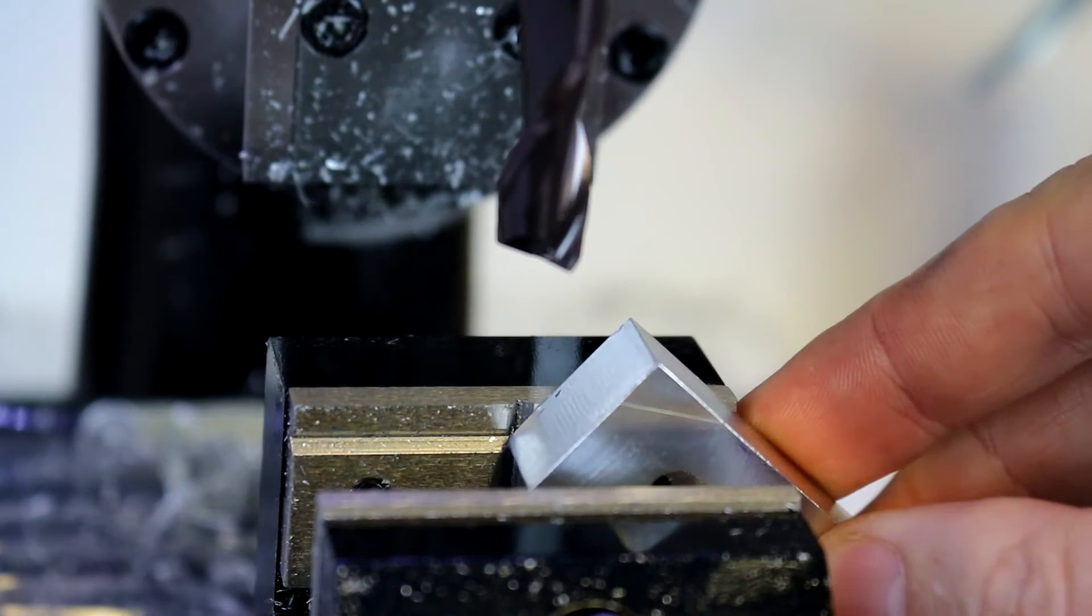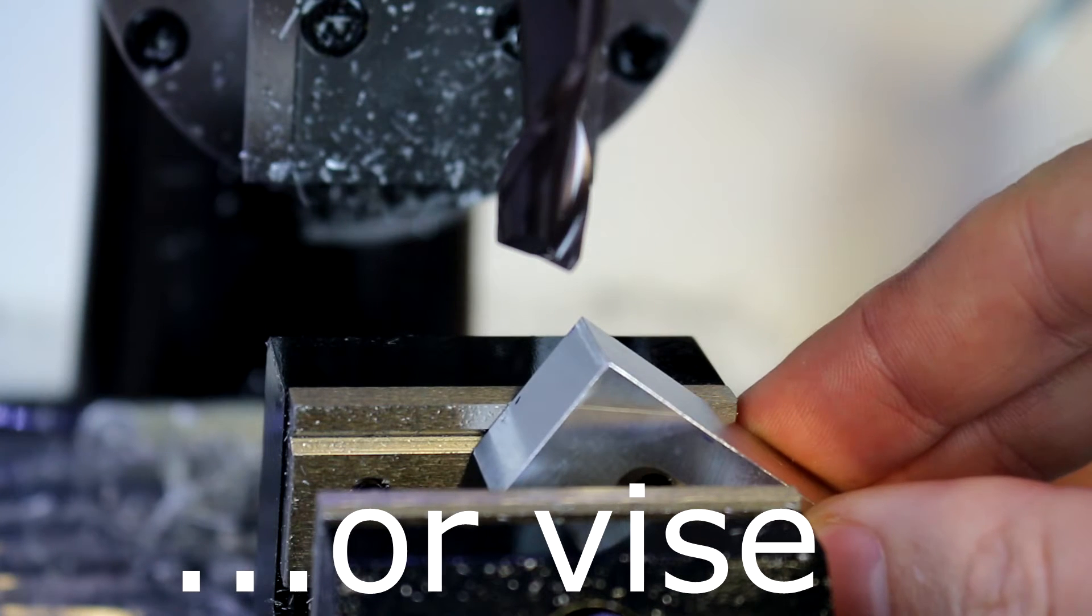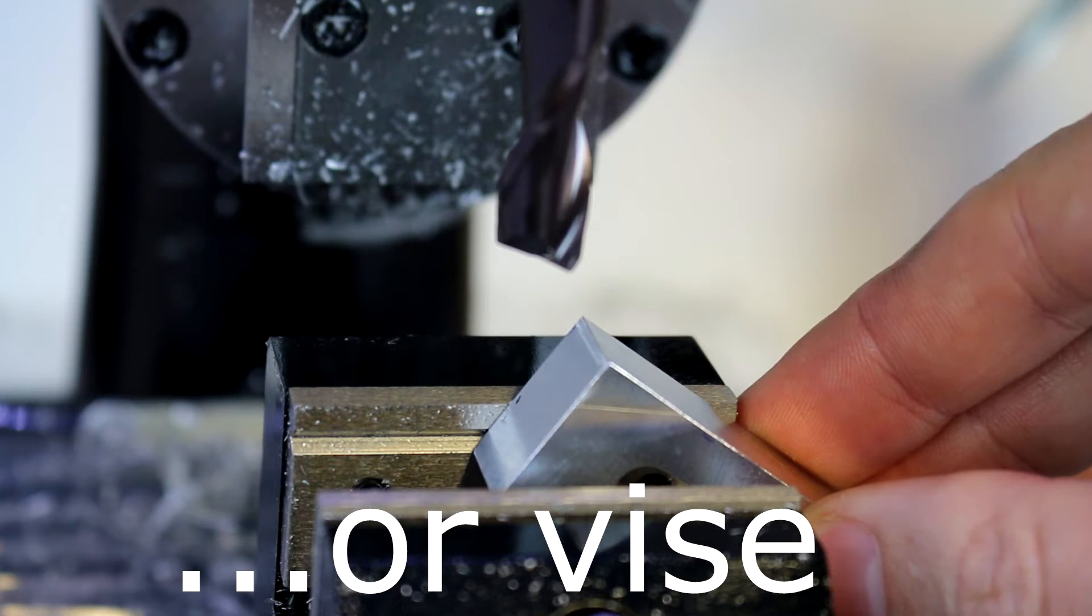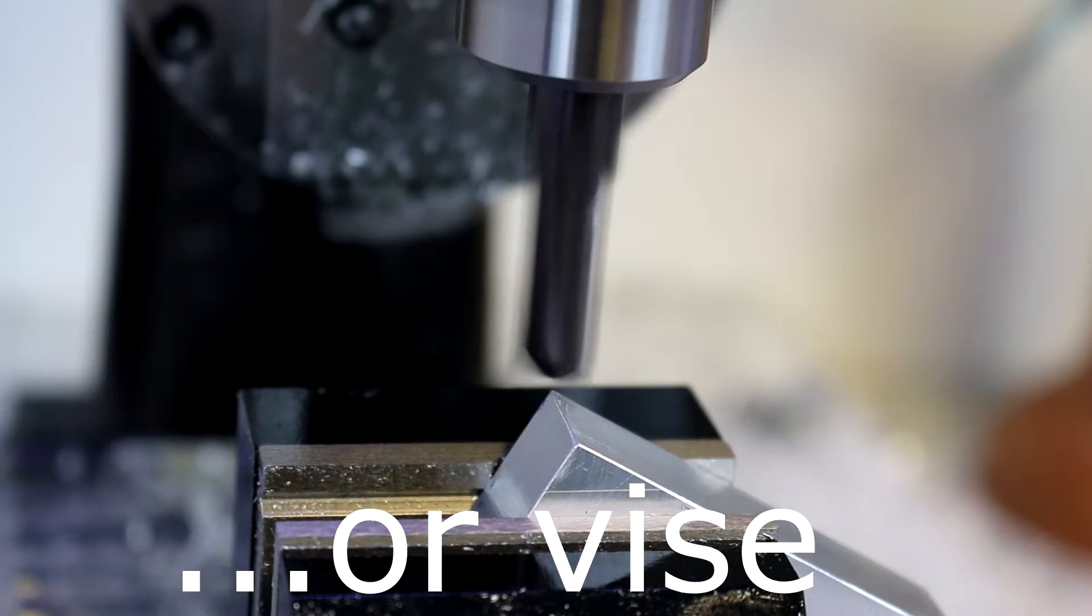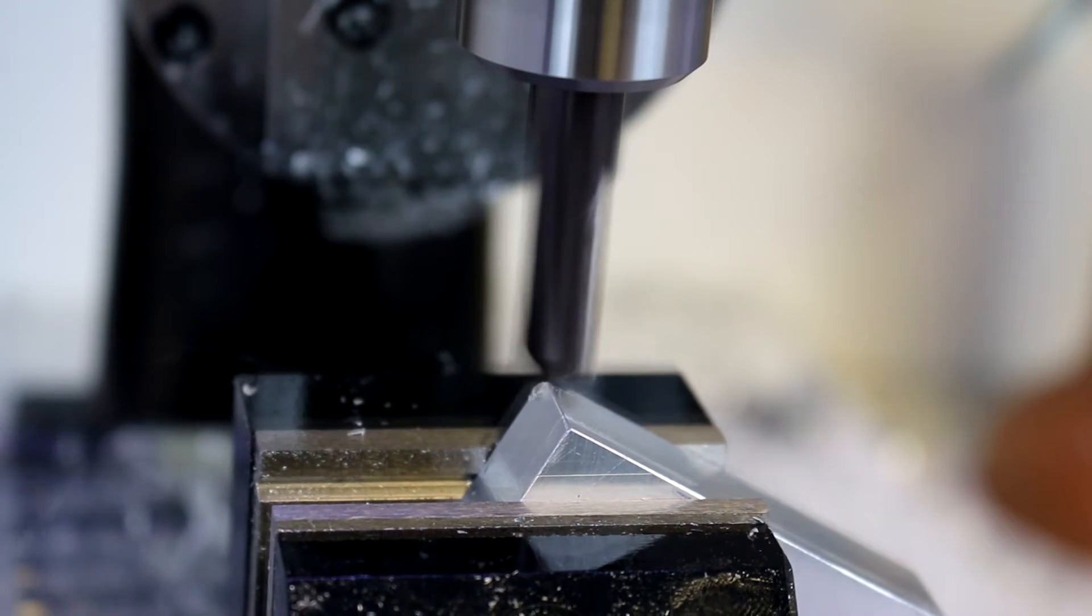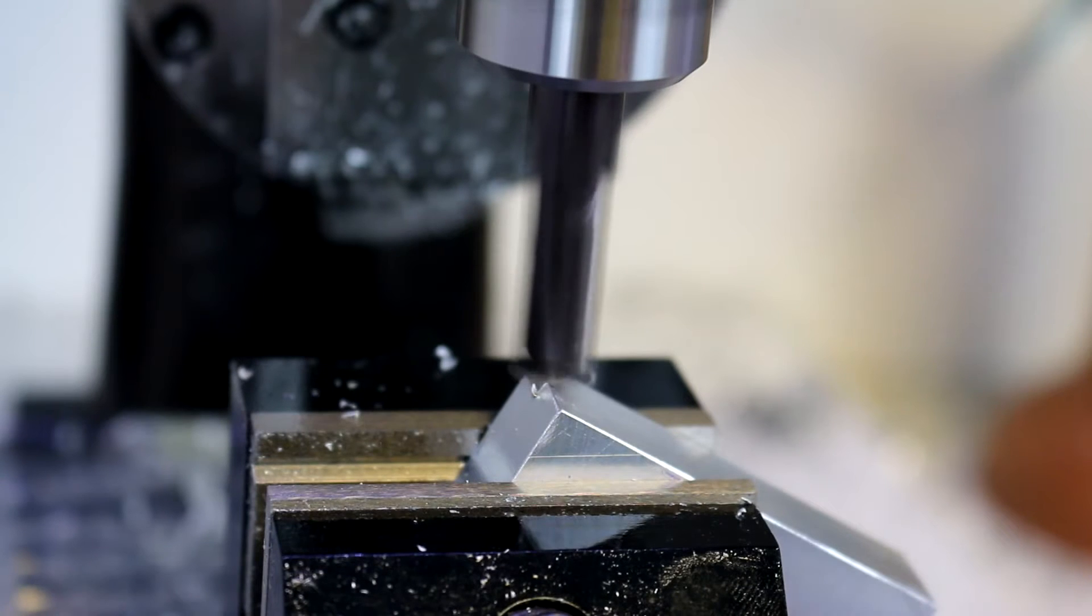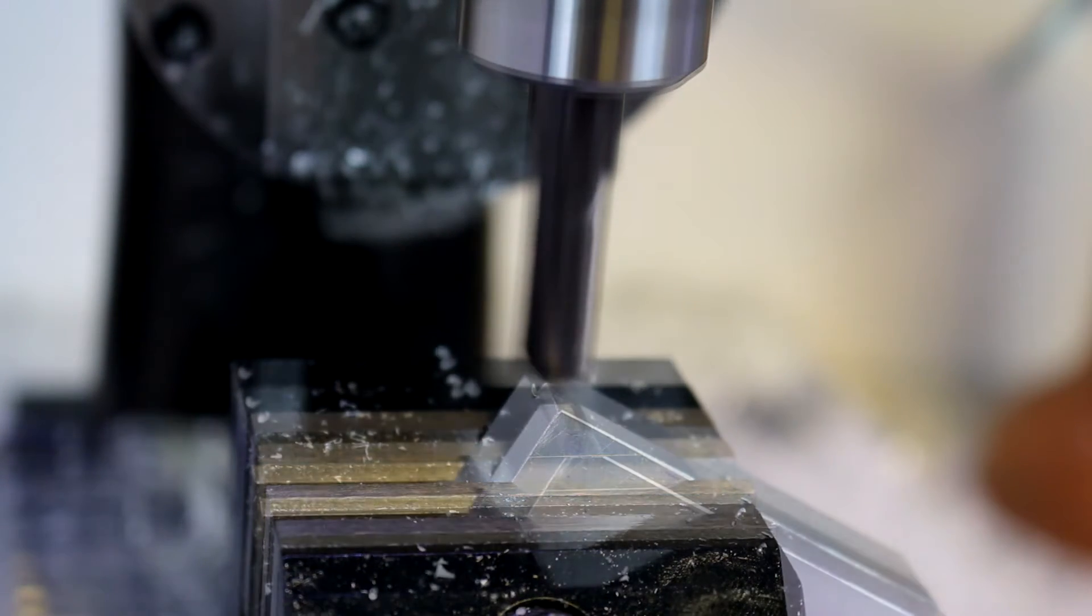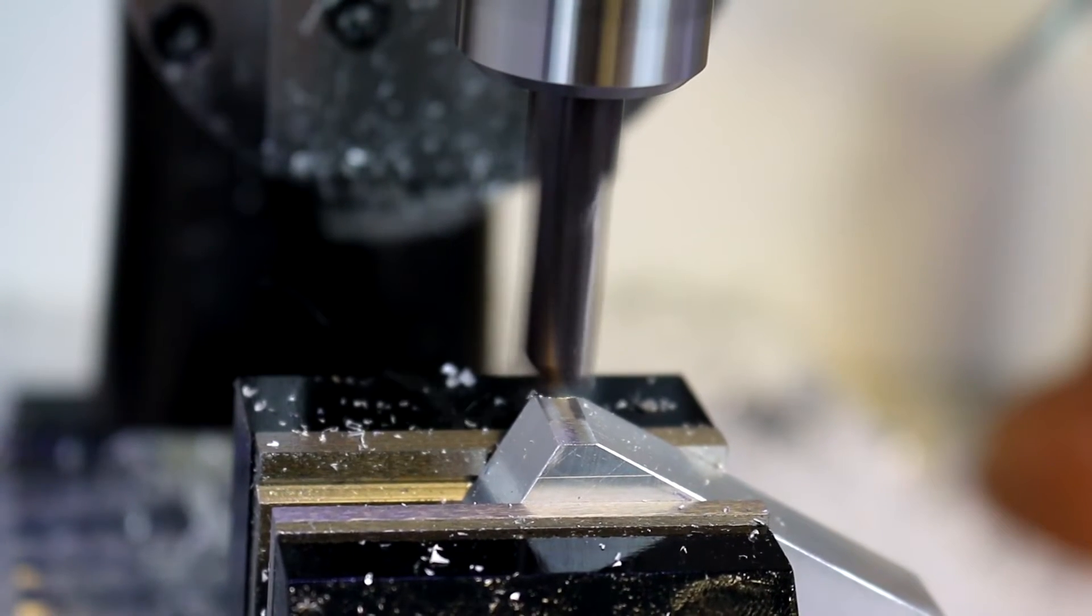Now the simplest way to do this would be to place it in the chuck as low down as we can, and we're going to do that for our first example. So I just used a protractor to mark a 30 degree angle on the face of the piece, and I've roughly aligned that with the top of the jaws.